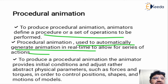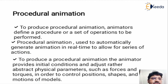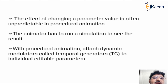To produce procedural animation, the animators provide initial conditions and adjust rather abstract physical parameters such as forces and torque in order to control the position, shapes and motion of the models. In procedural animation, the effect of changing a parameter value is frequently unpredictable and the animator has to run a simulation to see the result.